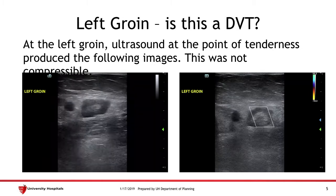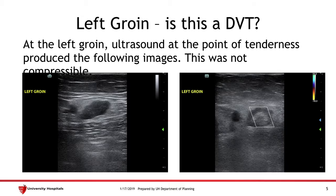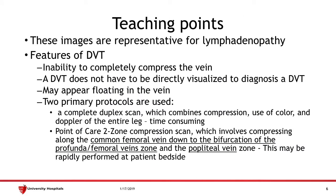I then proceeded to ultrasound the left groin where she was having tenderness and found the following images. On the right image, this was during compression attempts and it did not appear to be compressible. Which brings us to our question: is this a DVT, and is the object in the center a visualized DVT? The answer is no — these images are actually representative of a lymph node with lymphadenopathy.